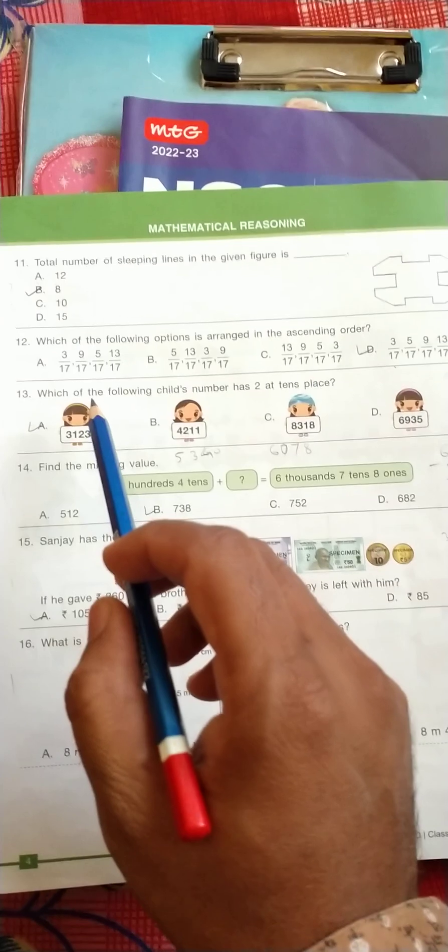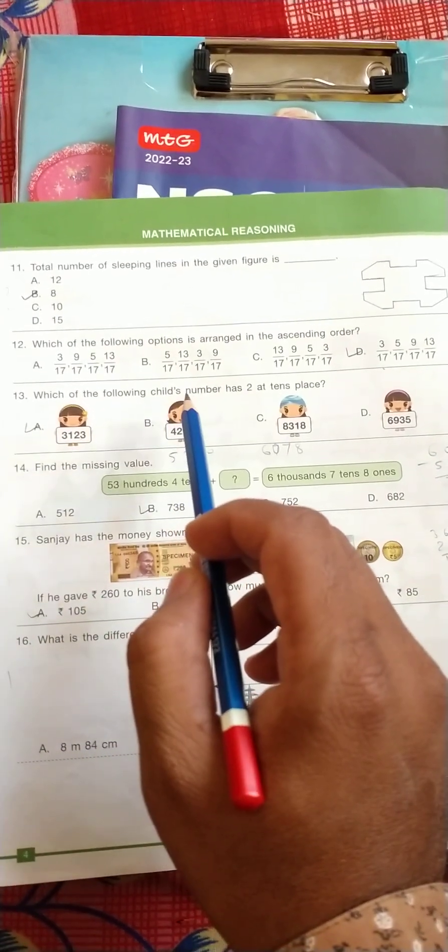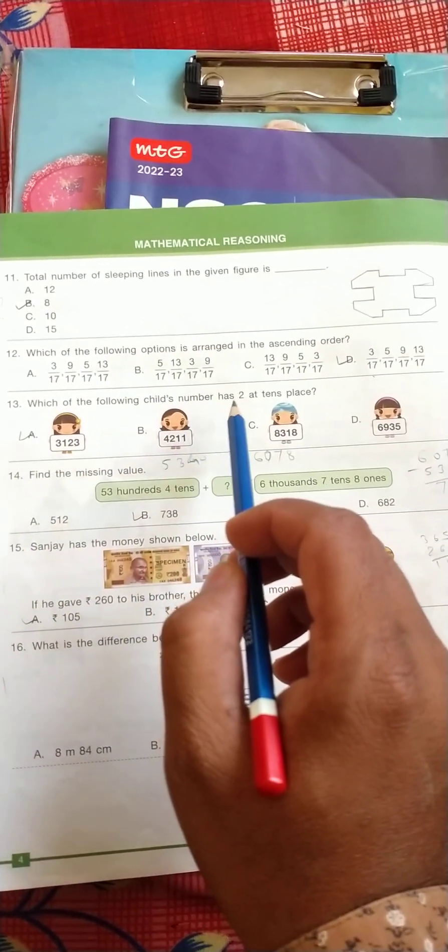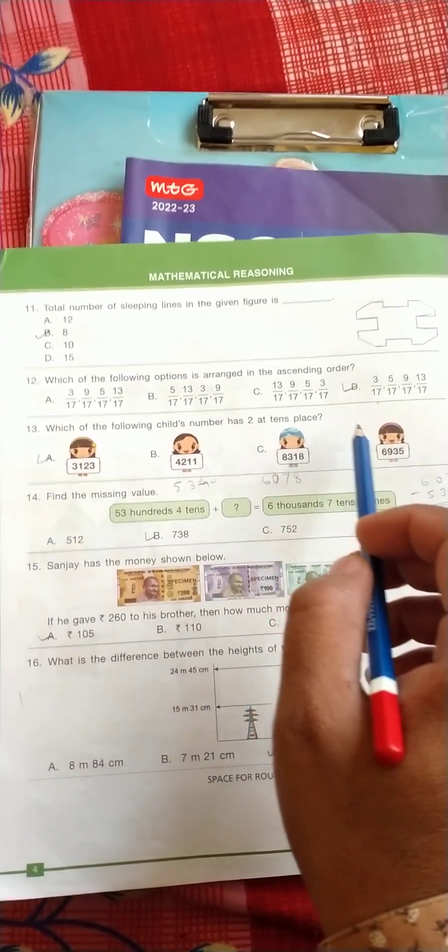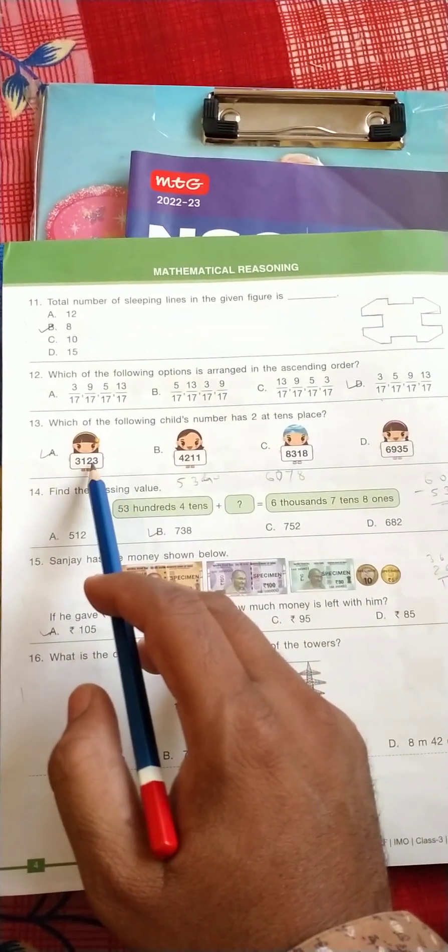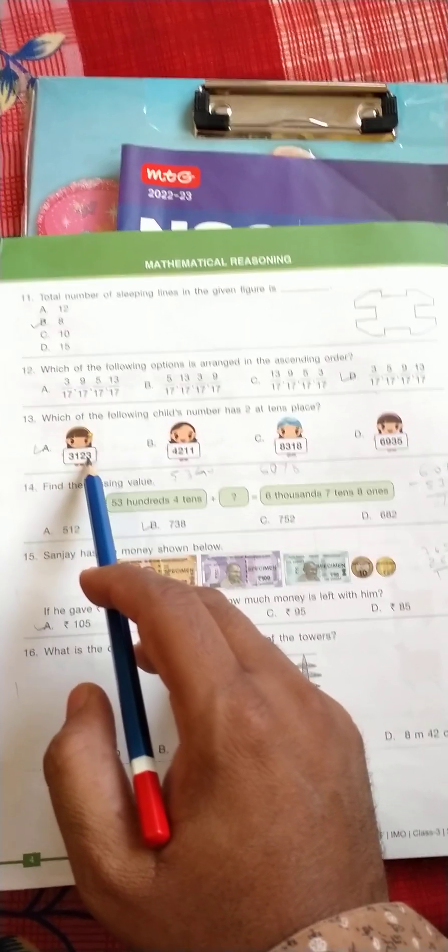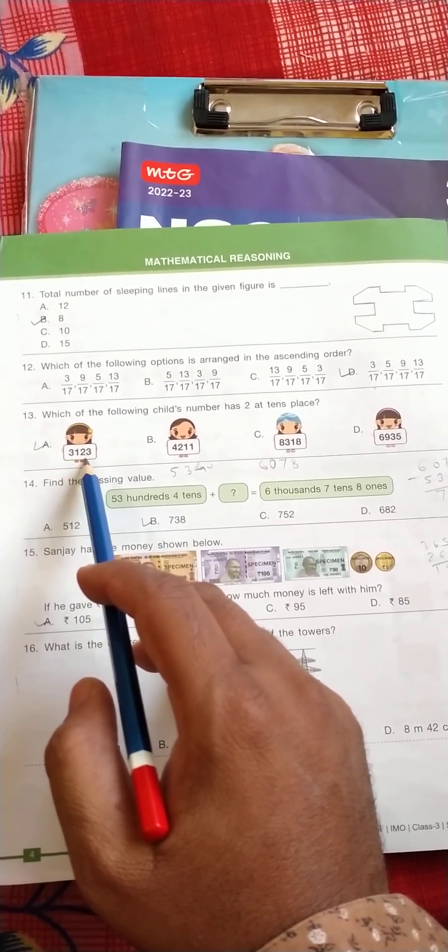Question number 13: which of the following child's number has 2 at its 10th place. So the correct answer is A, because here 3 is in 1 place and 2 is in 10 place.